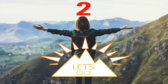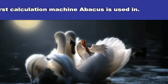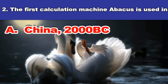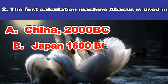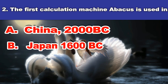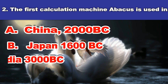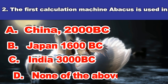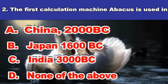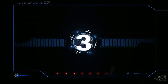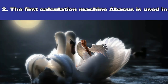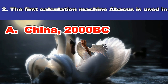Second question: The first calculation machine, abacus, is used in — A. China, 2000 BC. B. Japan, 1600 BC. C. India, 3000 BC. D. None of the above. And the answer is: China, 2000 BC.